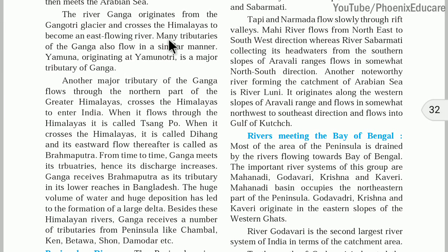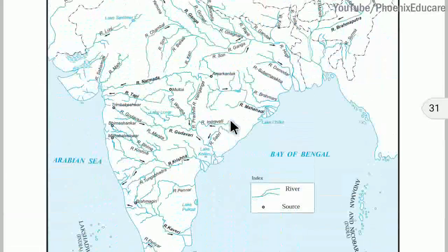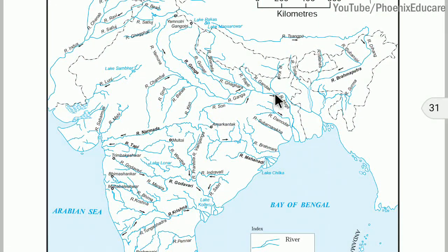There is also the Yamuna river, originating from Yamunotri glacier, which is a major tributary of Ganga. Yamuna river and Ganga river meet each other at Allahabad in Uttar Pradesh. Ganga receives Brahmaputra as its tributary in its lower reaches in Bangladesh. Both rivers meet and their combined flow continues to the Bay of Bengal in Bangladesh.